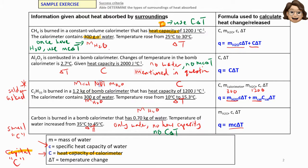The calorimeter contains 300 grams of water. Once we see mass of water, we can straight away put MC∆T in our formula. It says the temperature rose from 25 degrees Celsius to 30 degrees Celsius, so we can calculate the change in temperature. Once you see the word 'heat capacity,' you can use C∆T.